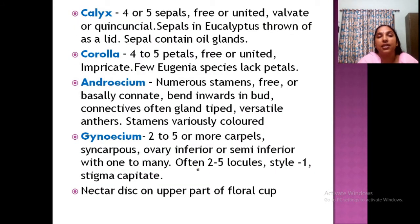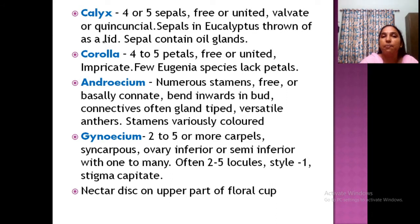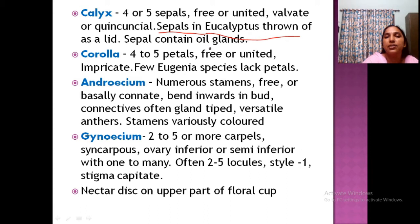The calyx has four or five sepals, which may be free or united — both conditions are present, with all types of aestivation found here. A very important point: in eucalyptus the sepals are thrown off as a lid. The sepals in eucalyptus also contain an oil gland.